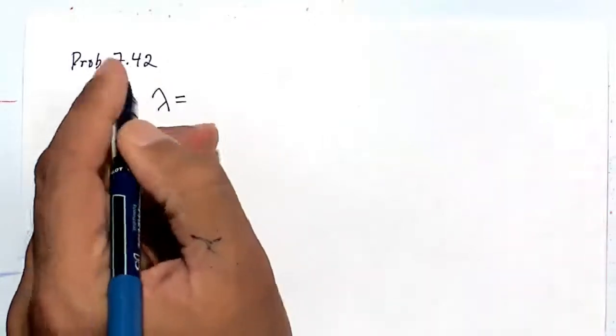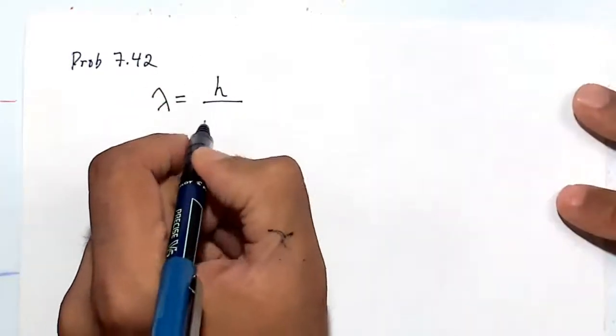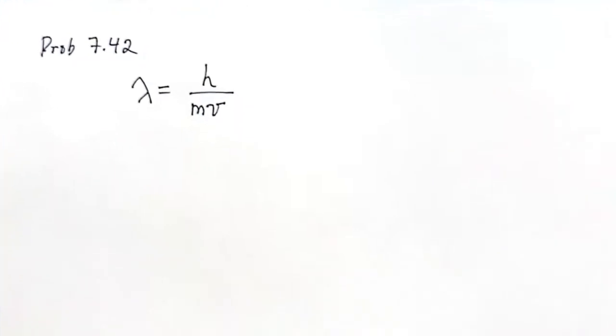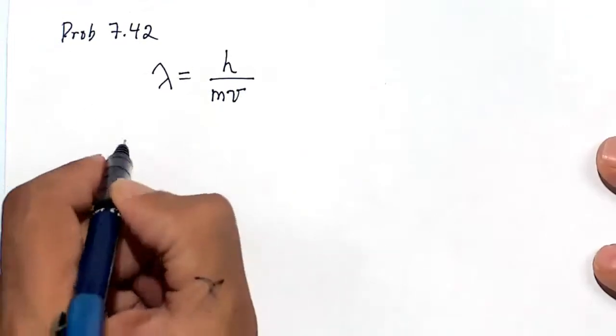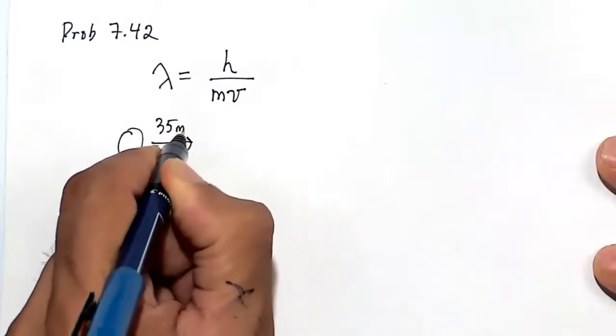The de Broglie wavelength for anything that moves will have a wavelength that equals Planck's constant over mass times velocity. Mass times velocity also equals momentum. The ping-pong ball is 2.5 grams traveling at 35 miles per hour. What is the wavelength of such a motion?